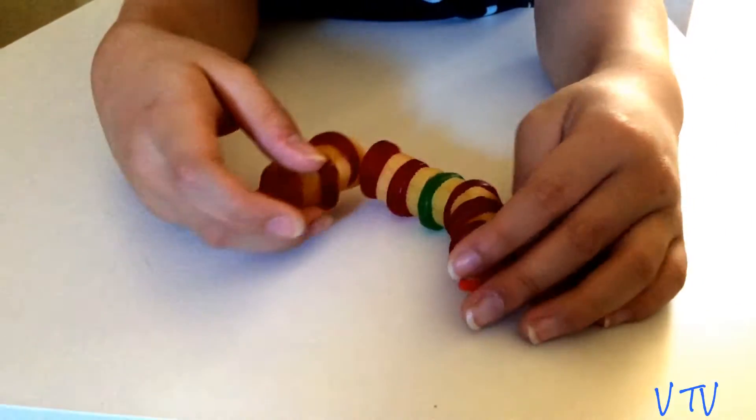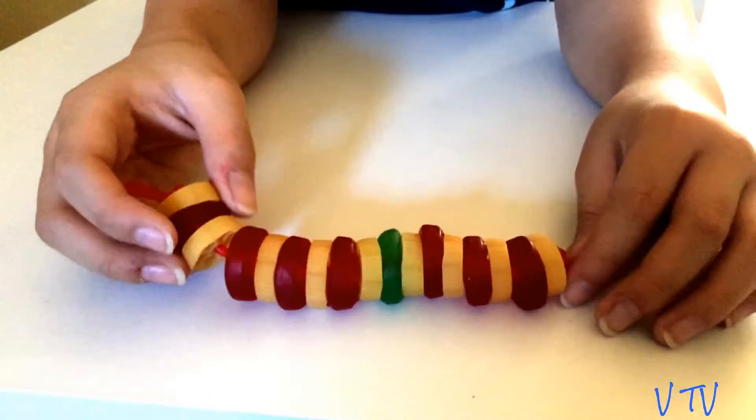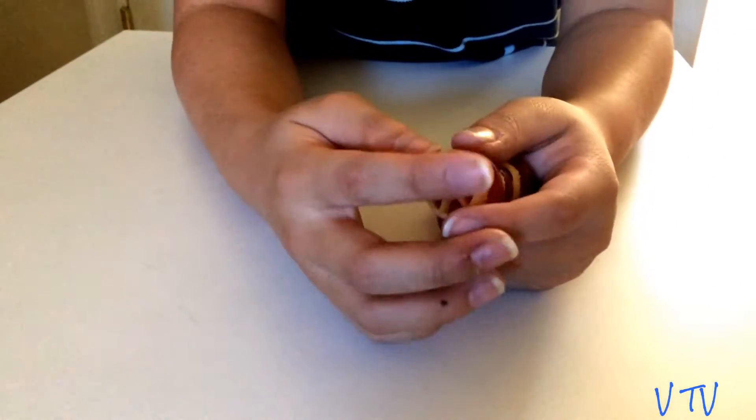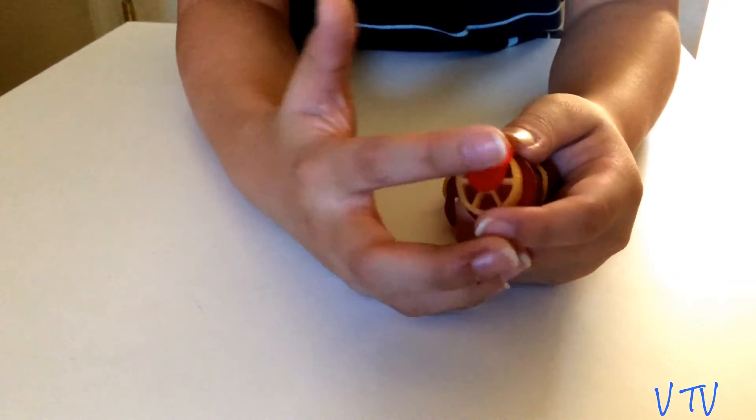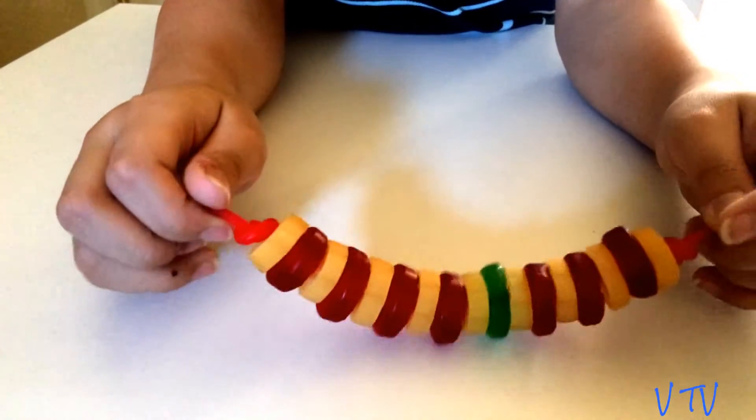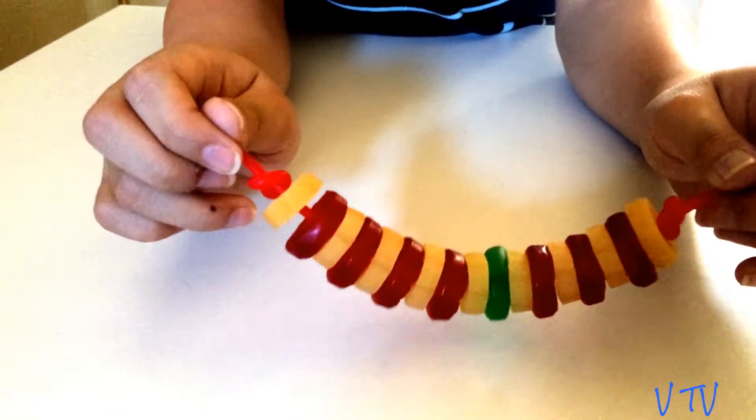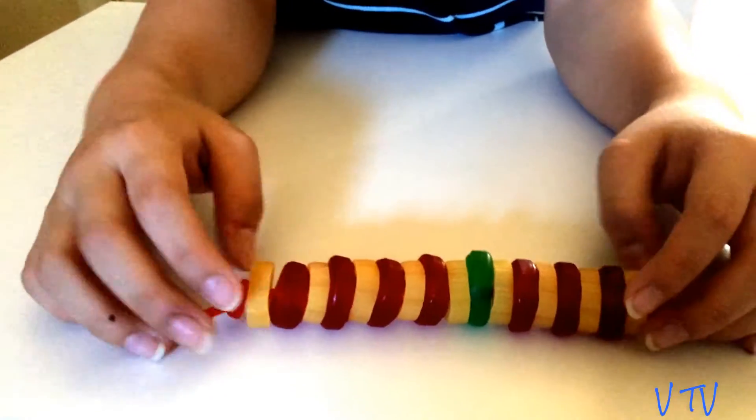And in here, as you can see, this is the spinal cord. It keeps everything together, and that is what the Twizzlers are for. That's why it's in the middle there.